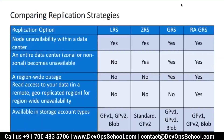Comparing the replication options: for node availability within the data center, LRS stores three copies across three different storage devices, so if one fails, the data is still available. However, if the whole data center goes down — the rarest of scenarios — LRS will not be a feasible solution. In that case, ZRS, GRS, or RAGRS may be of use.